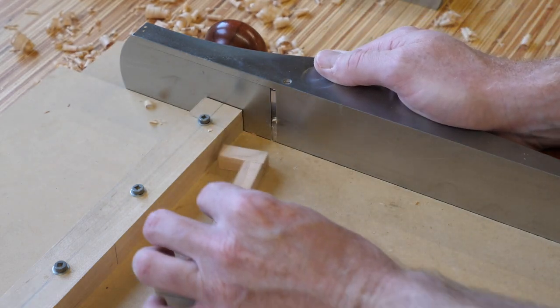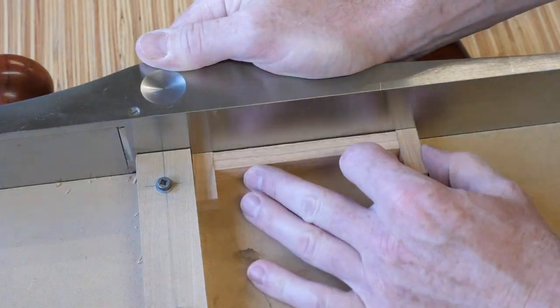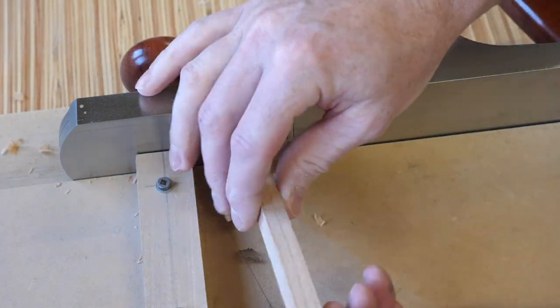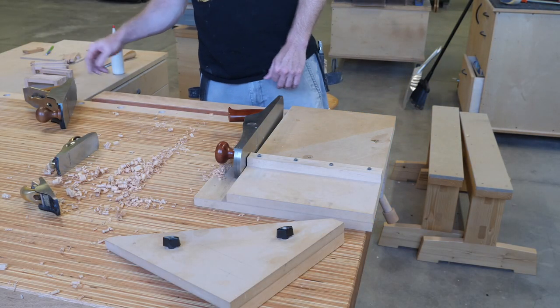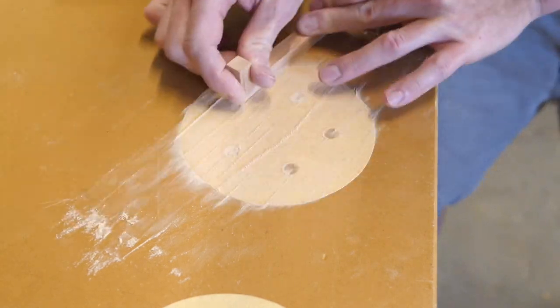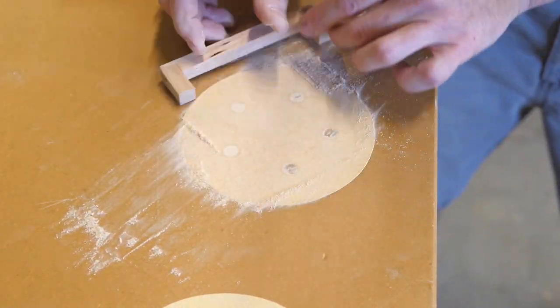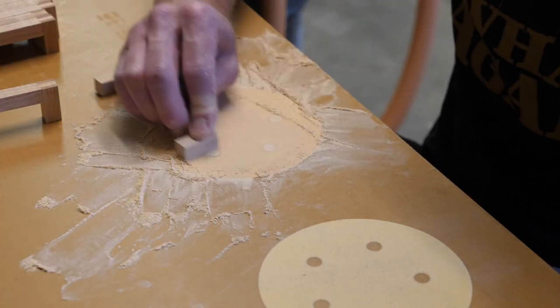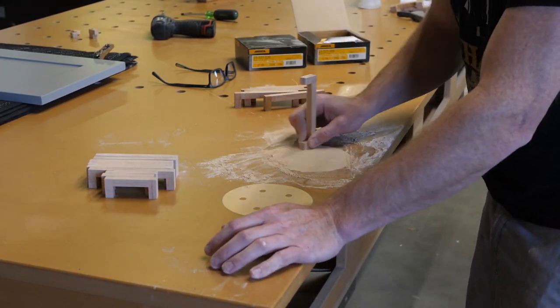Once the glue is dry, I knock down the hangover joinery with a hand plane. After the hangover joinery has been cured, I sand all surfaces with 180 then 220 grit sandpaper. I like to use my workbench as a giant sanding block. This works great with adhesive back sandpaper.